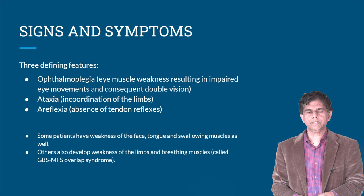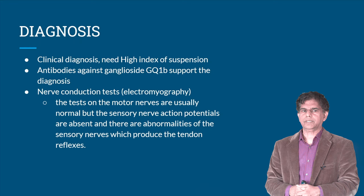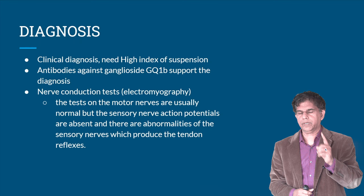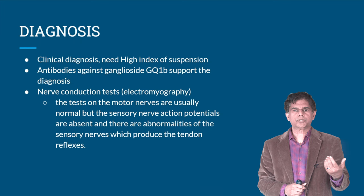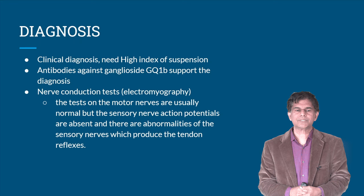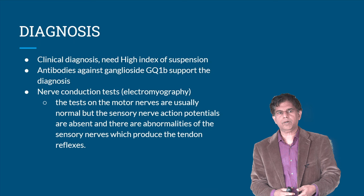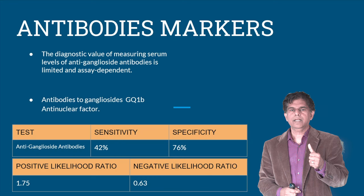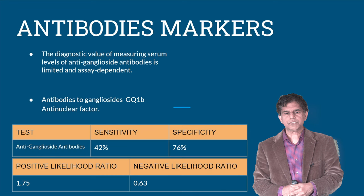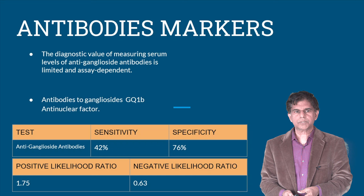Diagnosis is clinical and requires a high index of suspicion. Always remember to check antibodies against ganglioside GQ1B — that's a very important marker. Motor nerve conduction tests and EMG are usually normal, but sensory nerve action potentials can be absent due to abnormalities of the sensory nerves that produce tendon reflexes. The GQ1B antibody has 42% sensitivity and 76% specificity, with a positive likelihood ratio of 1.75 and a negative likelihood ratio of 0.63.